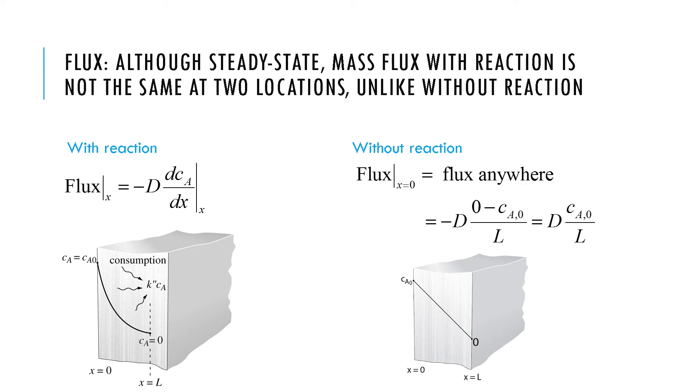We now make an additional observation on flux: the mass flux with reaction is not the same at two locations even though we are at steady state. You can see this because flux has to do with slope and the slope is not the same at these two points. You can convince yourself by plugging in for C_A and seeing that flux is really a function of x.